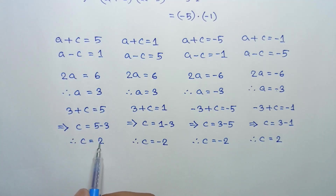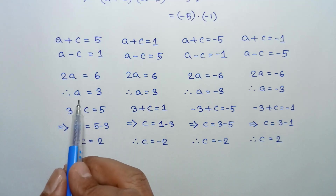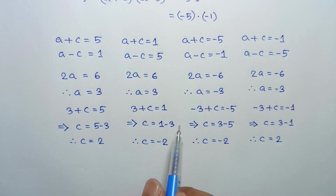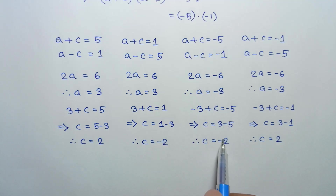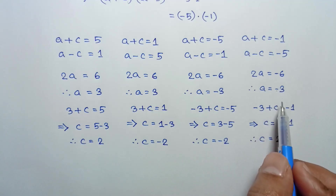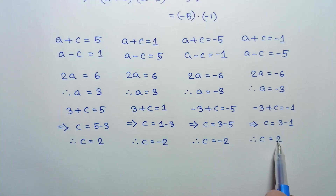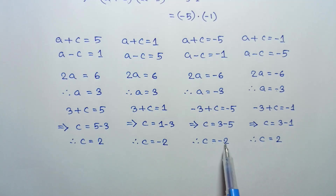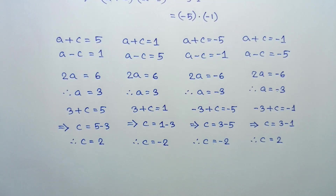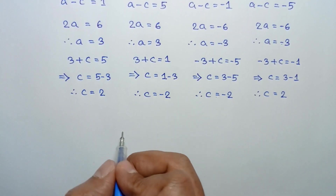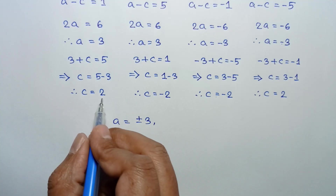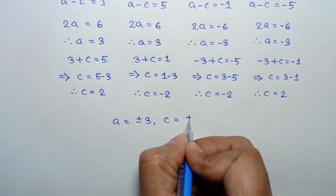We can see that when a equals 3, the value of c equals 2 or negative 2, and when a equals negative 3, the value of c equals positive or negative 2. So in general, we can conclude that a equals plus or minus 3 and c equals plus or minus 2.